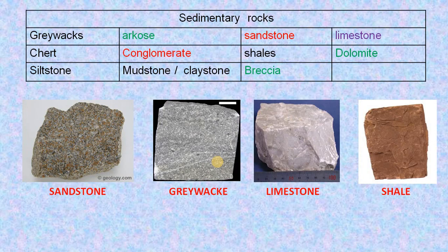The classification of sedimentary rocks includes greywacke, chalk, siltstone, arkose, conglomerate, mudstone or claystone, sandstone, shales, breccia, limestone and dolomite. We can see all the sedimentary rocks — especially sandstone, greywacke, limestone, and shales in the picture — and how they appear.